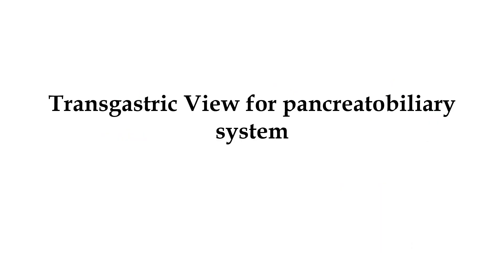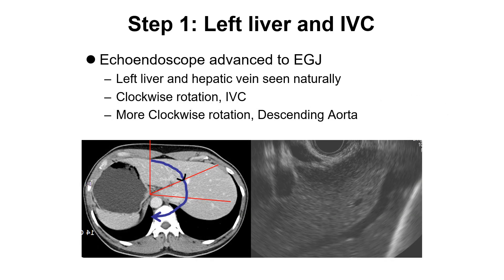I will show you how to observe the pancreatic biliary system by transgastric route. Step 1: Left liver and inferior vena cava. When the patient is lying in the left lateral position, scope is advanced to the esophagogastric junction, and the transducer will be pointing to the anterior side. On EUS imaging, the left liver and hepatic vein can be seen naturally.